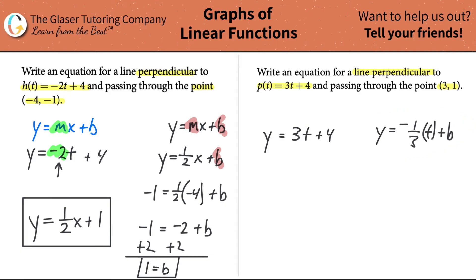So -1/3 times t plus our y-intercept b. Now remember, how do we figure out the y-intercept? They told us a point on that new line. We know a point, we know the x and y values. So guess what we're going to do? Simply plug them into the formula. The y value is going to be 1.